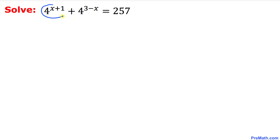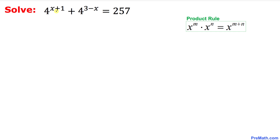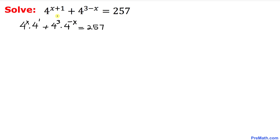Let's focus on 4^(x+1) and 4^(3-x). We can write them as 4^x · 4^1 plus 4^3 · 4^(−x), equal to 257, by using the product rule.